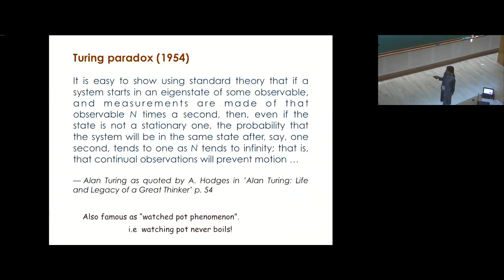This paradox has another name called Turing paradox, named after Alan Turing. It is easy to show using standard theory that if a system starts in an eigenstate of some observable and measurements are made of that observable n times a second, then even if the state is not stationary one, the probability that the system will be in the same state after one second approaches 1 as n tends to infinity. So the continual observations will prevent motion.